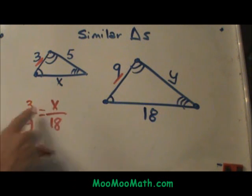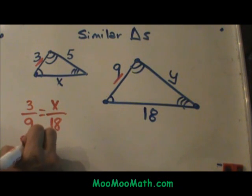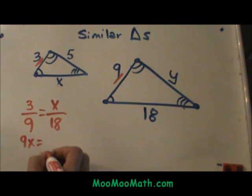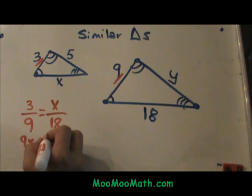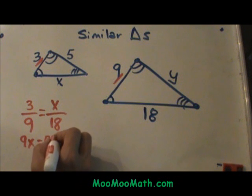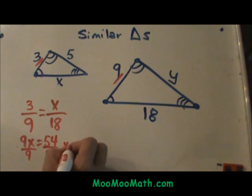Now all you have to do is cross multiply. So you can take x times 9 and get 9x, and 3 times 18 is 54, and then I divide both sides by this coefficient of 9 and I get x is 6.